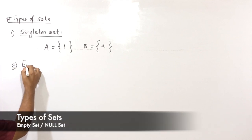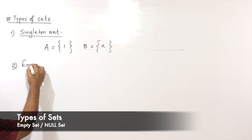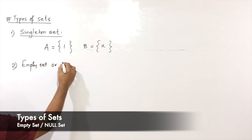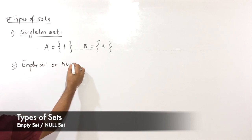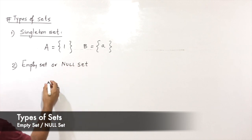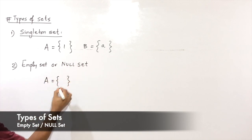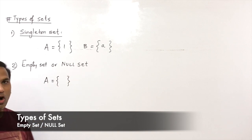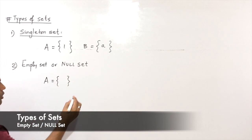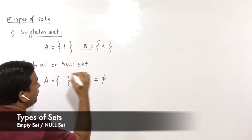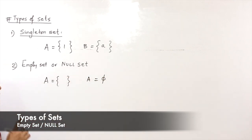The second type is the empty set or null set. A set without any element is called an empty set or null set. It can also be written as A is equal to φ (phi), meaning null set.